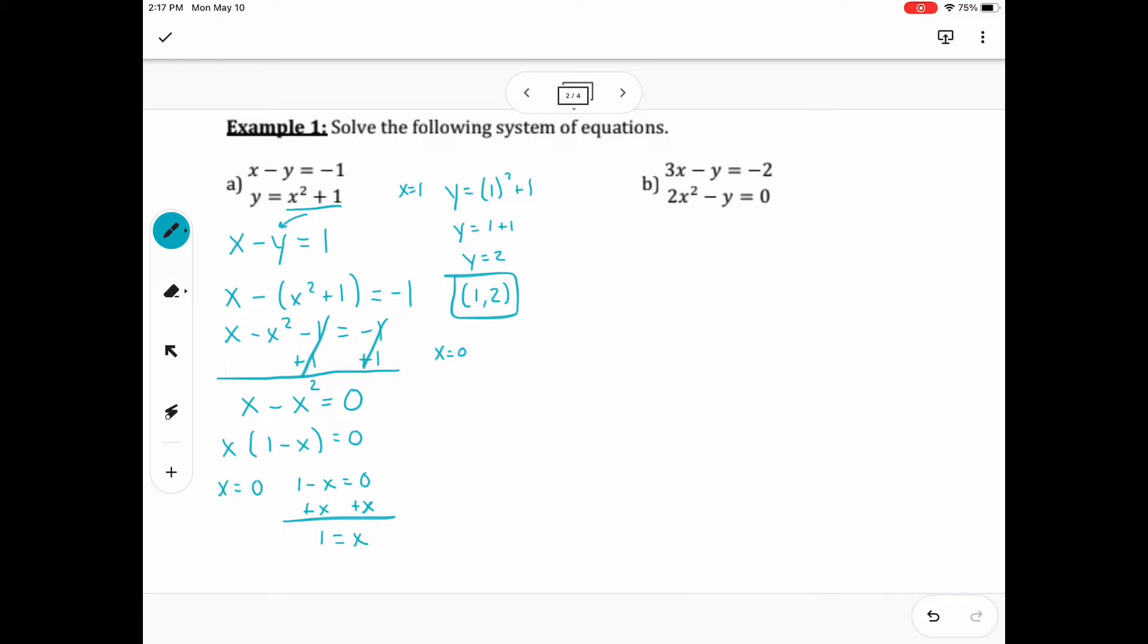And then I also get another answer of 0 comma 1. And those would be my two answers. So this would be a two-solution possibility.